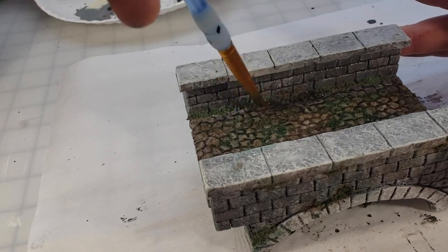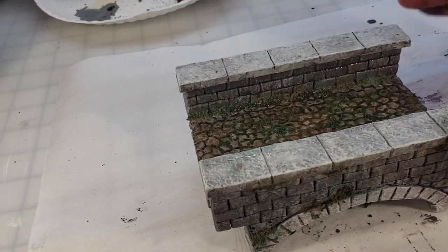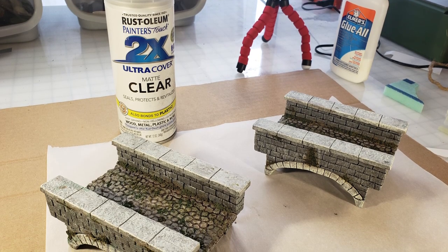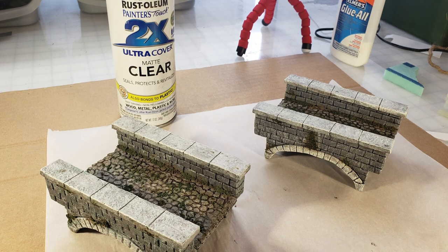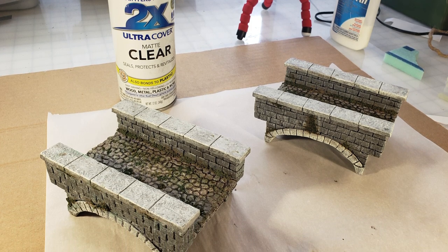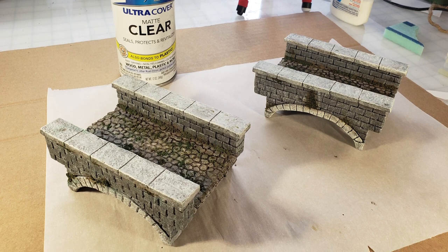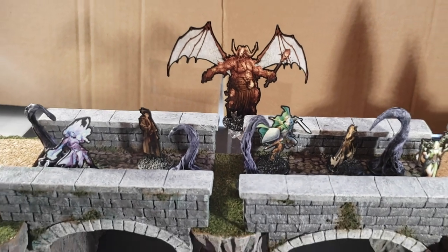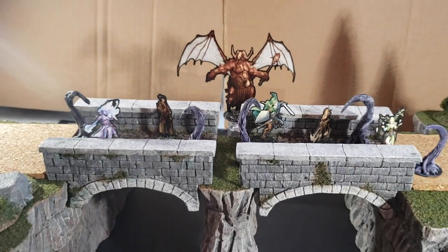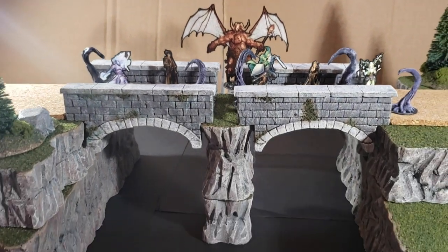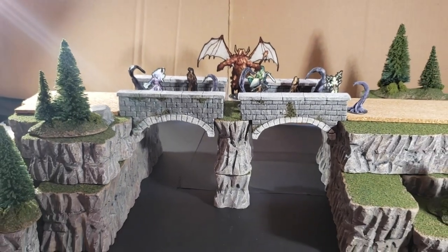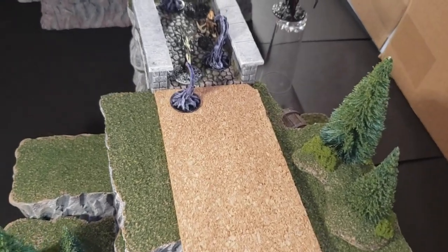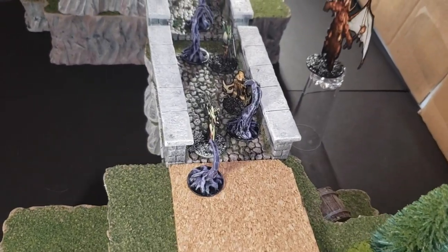Once the wash is dried I took them outside and hit them with a Rust-Oleum clear matte coat and this will protect them against fingerprints and chips and smudges. And now we get to see them in all their glory. I've created a scene here with my cliffs that I did in last video. Check this out, your players will freak when they see this scene play out on the table.